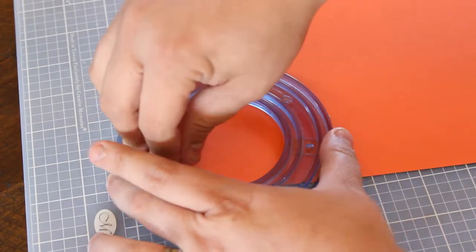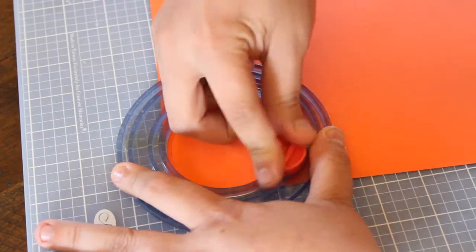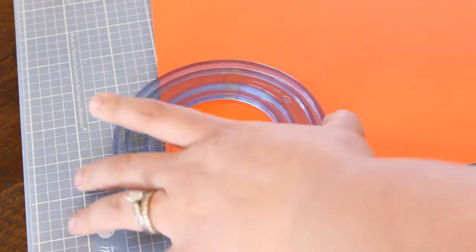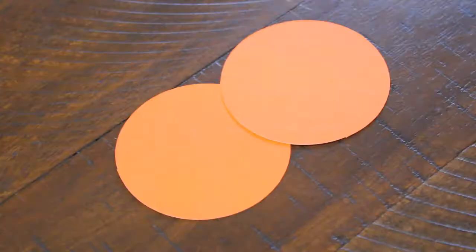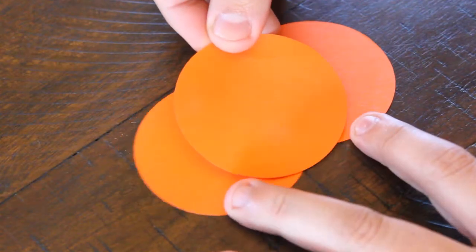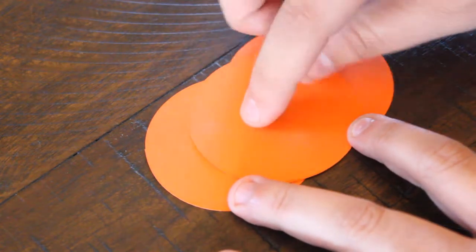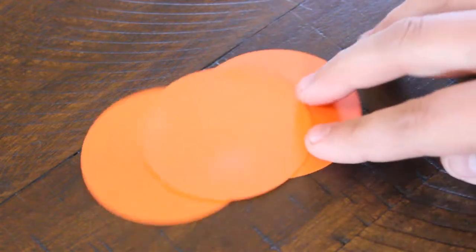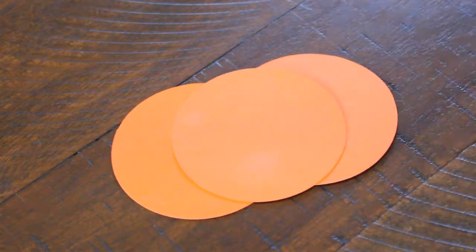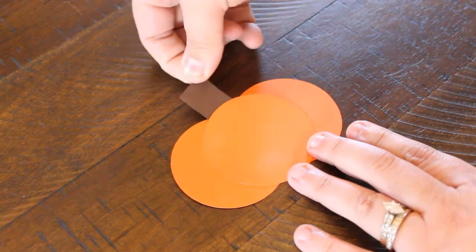Then moved on to the pumpkin. For this one I grabbed a circle cutter. This is my favorite way to do a paper pumpkin. It's super easy. Just cut out three circles of the same size, and then you're going to overlap two in the back and put one in the front to give yourself a cute little pumpkin shape. Then just cut out a little brown stem to throw in it to finish off the pumpkin.